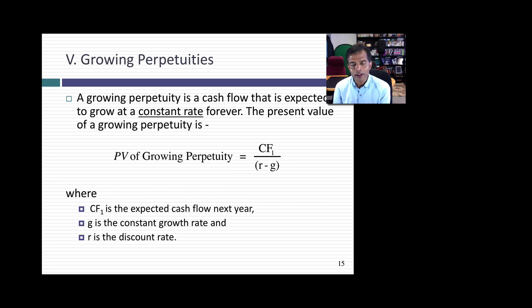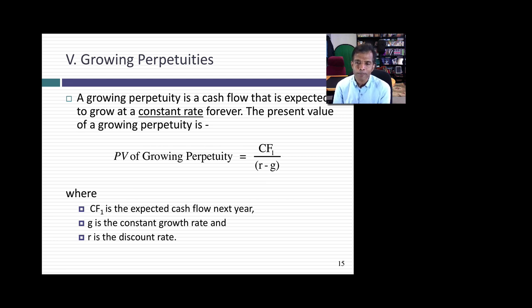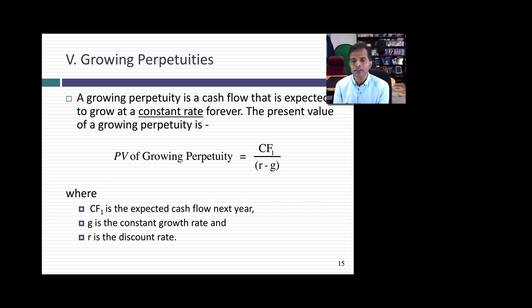Finally, the growing perpetuity — a cash flow growing at a constant rate forever, like $100 growing at 2% a year forever. The present value of a growing perpetuity is the expected cash flow one year out divided by the difference between the discount rate and the growth rate: (A × (1 + G)) ÷ (R − G), or equivalently $102 ÷ (R − G). This is one of the most used — and misused — equations in corporate finance and valuation. You'll see it used to compute terminal value or end value for a project, and I'll introduce rules to keep it from getting out of control.